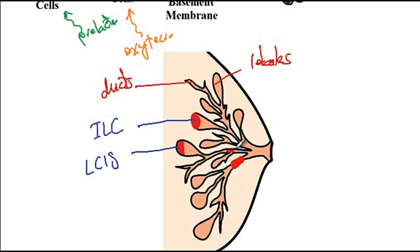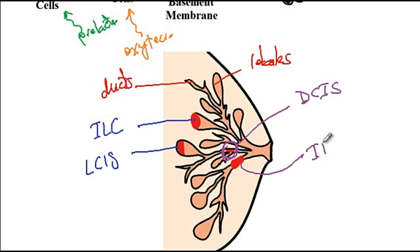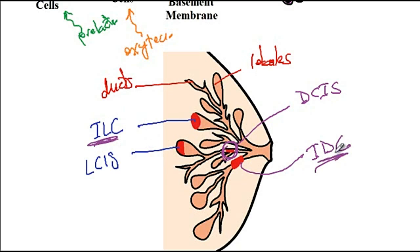Malignant cells confined inside a duct represent ductal carcinoma in situ. Malignant cells that have already invaded the basement membrane of the duct represent invasive ductal carcinoma. Both lobules and ducts are made of luminal epithelial and myoepithelial cells. Once luminal epithelial cells become cancerous and invade the myoepithelium and basement membrane, they will spread to distant sites.